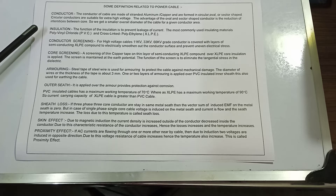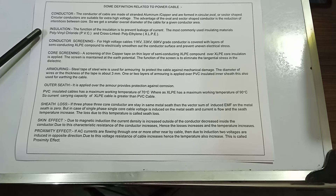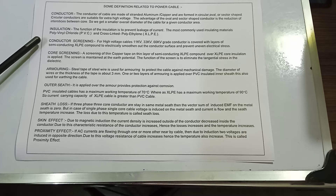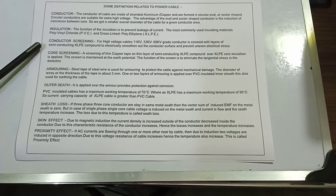This gives a smaller overall diameter of the cable for a given conductor area. Next: insulation. The function of insulation is to prevent leakage of current. The most commonly used insulating materials are polyvinyl chloride (PVC) and cross-linked polyethylene (XLPE). Next: conductor screening. For high voltage cables — 11 kV, 33 kV, 66 kV grade — the conductor is covered with layers of semiconducting XLPE compound to electrically smooth out the conductor surface and prevent uneven electrical stress.